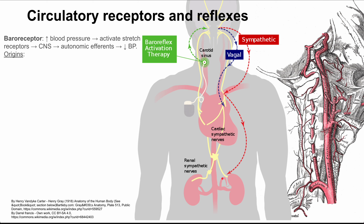First, let's talk about the baroreceptor. The baroreceptor responds to blood pressure. If you have increased blood pressure, for instance, you'll activate stretch receptors in blood vessels. These stretch receptors will then send a signal to the central nervous system, which will respond with a signal through autonomic efferents. Those autonomic efferents can then affect your blood pressure, and if your blood pressure was originally high, you can decrease it in response to hypertension. The origins are where the whole signal starts — where you're getting this detection of high blood pressure to begin with.